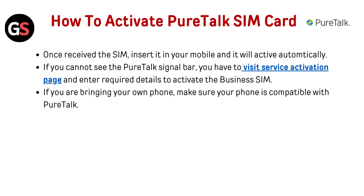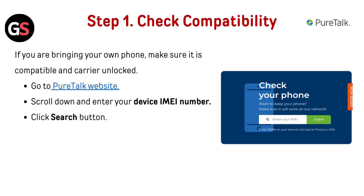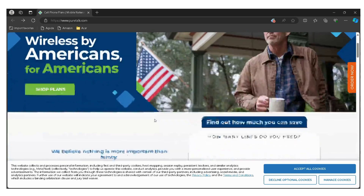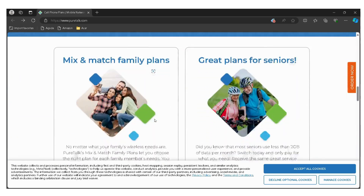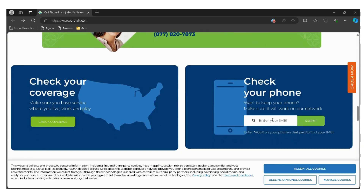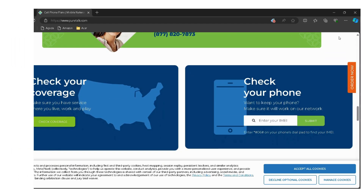If you are bringing your own phone, make sure your phone is compatible with PureTalk. Step 1: Check compatibility. Make sure your phone is compatible and carrier unlocked. Go to the PureTalk website — the link is given below in the description. Scroll down and enter your device's IMEI number, then click the Search button.